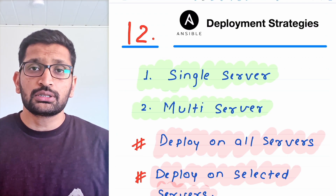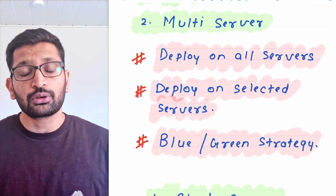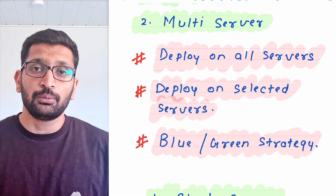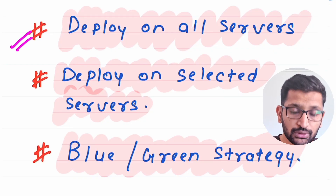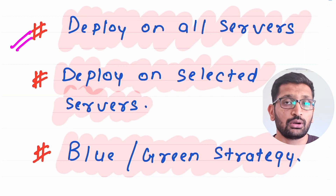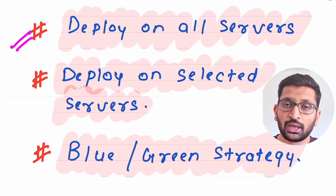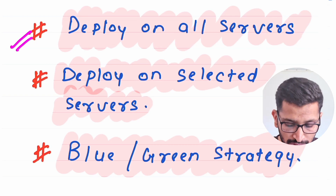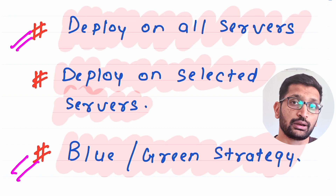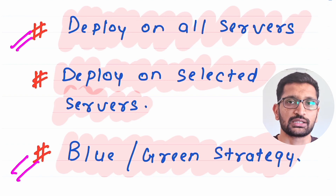In this lab session we are going to discuss about the deployment strategies. Specifically we will be talking about how to manage the deployment on all the servers, how to deploy on a subset or selected server, and finally how to implement the blue and green deployment strategy for your Ansible automation.